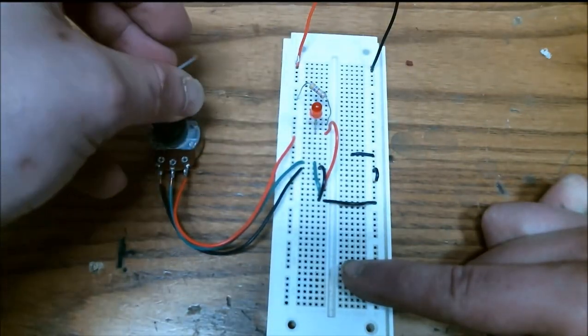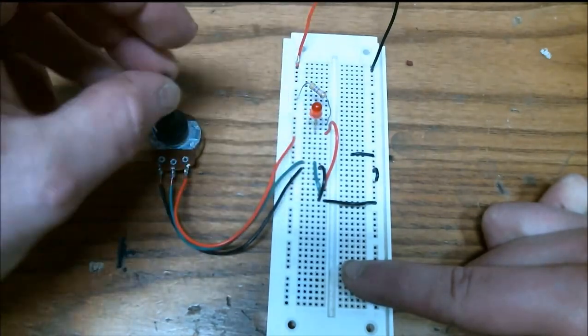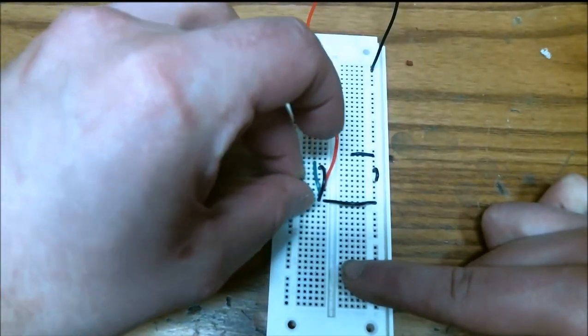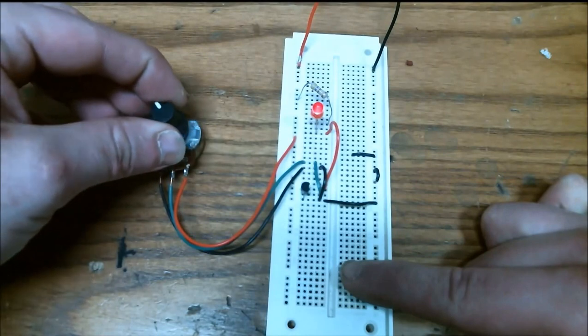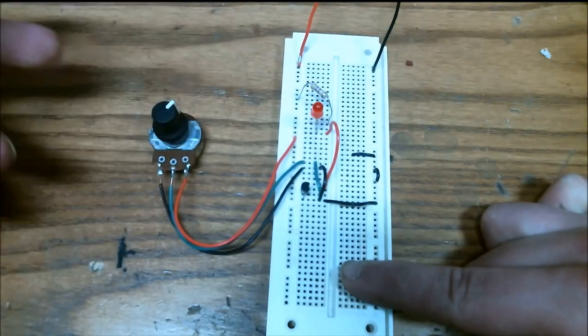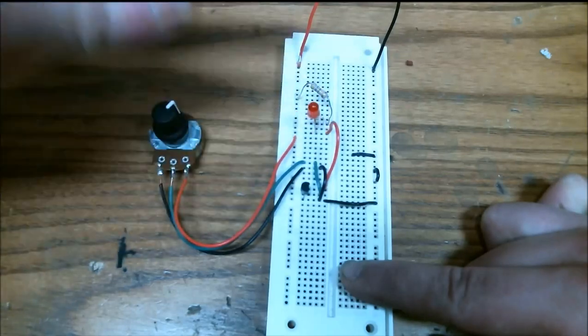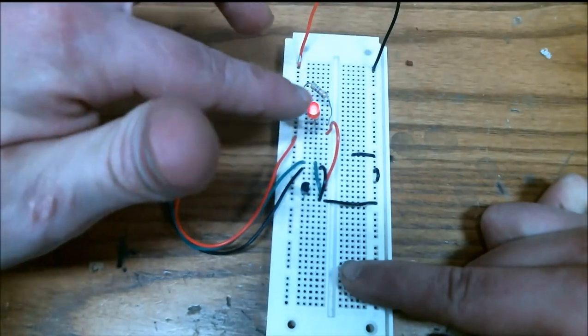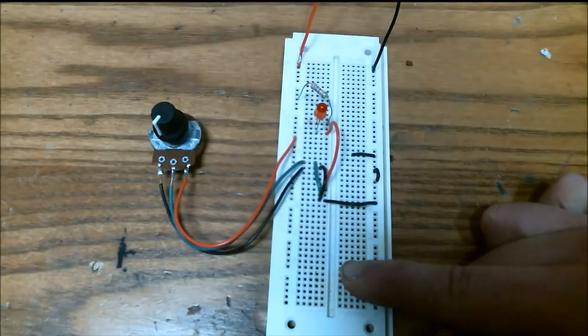Again, turn that back down, put this one in. And as you can see, when I put it up to a high voltage, the LED is off, and when I turn it down to a low voltage, the LED turns on. So that's a PNP.